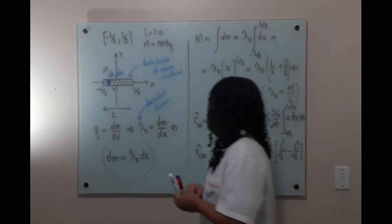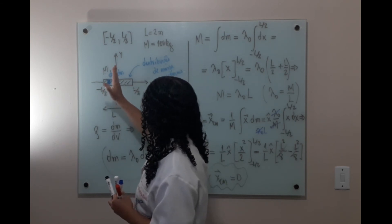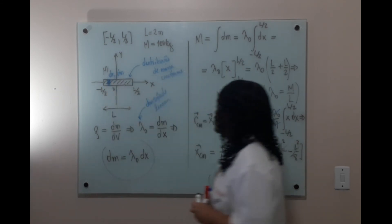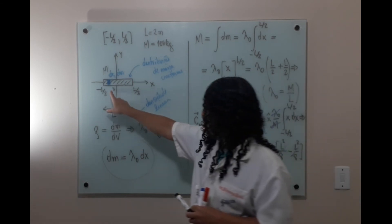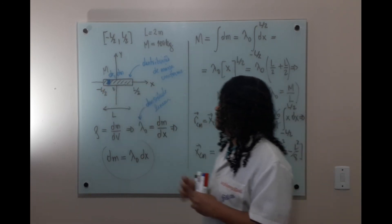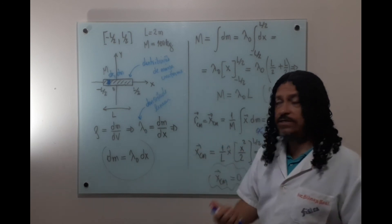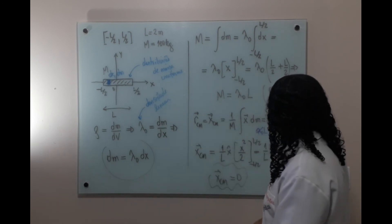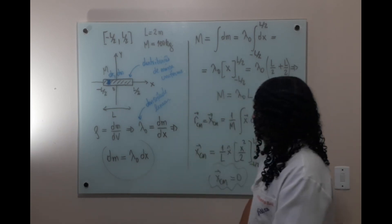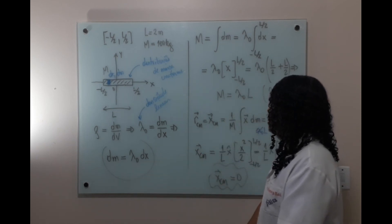Ou seja, como a barra está igualmente distribuída em massa e está exatamente centrada no 0, então a posição do centro de massa tinha que ser essa mesma posição 0. A gente fez isso considerando a barra como um corpo rígido contínuo. O que facilitou nossa conta foi o fato da distribuição de massa ser uniforme, ou seja, a densidade linear é igual em todos os pontos.